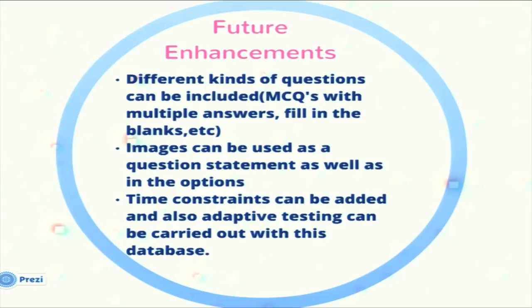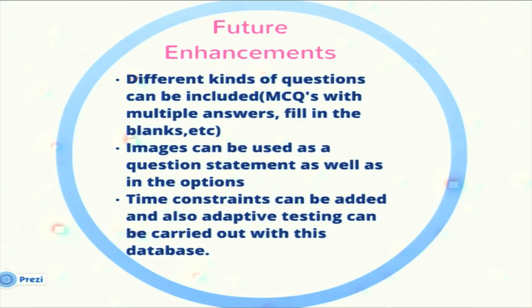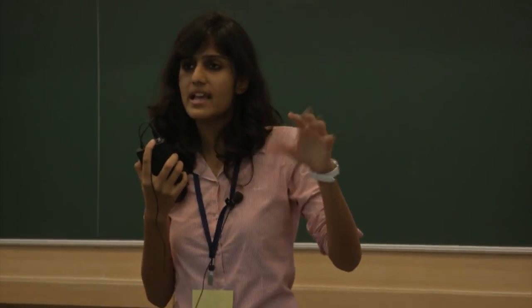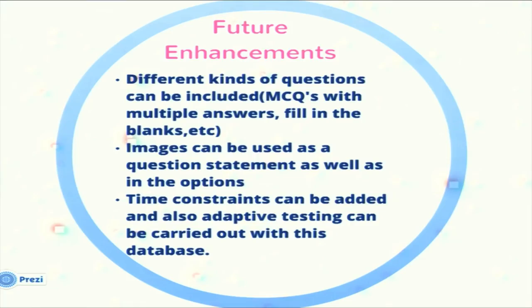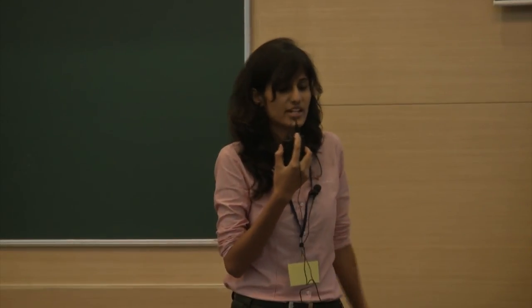For future enhancements: first, we can include more question types beyond MCQs and true/false — such as fill in the blanks and match the following. Second, images can be used in questions — the database already supports this; changing the question format attribute from 1 to 2 and providing an image address in the question statement will allow the software to fetch the image. Third, a time constraint can be added to convert it from a practice exercise to a proper quiz. Fourth, this database will be used by the adaptive testing software.